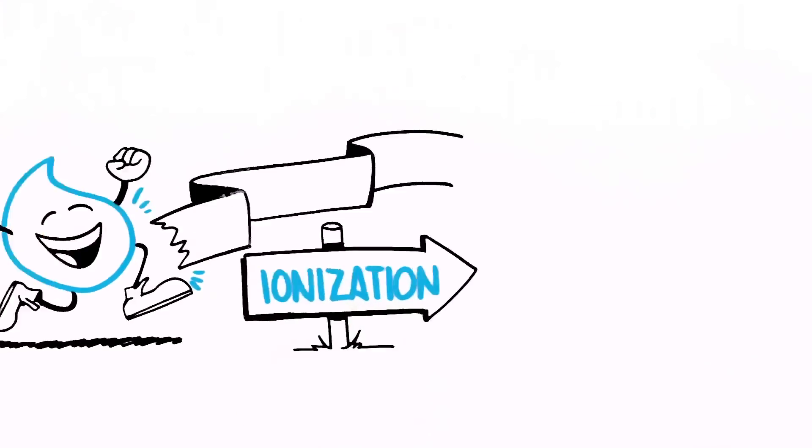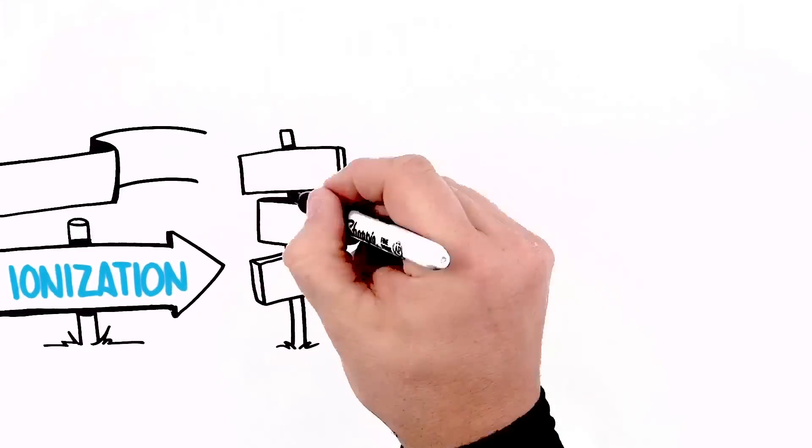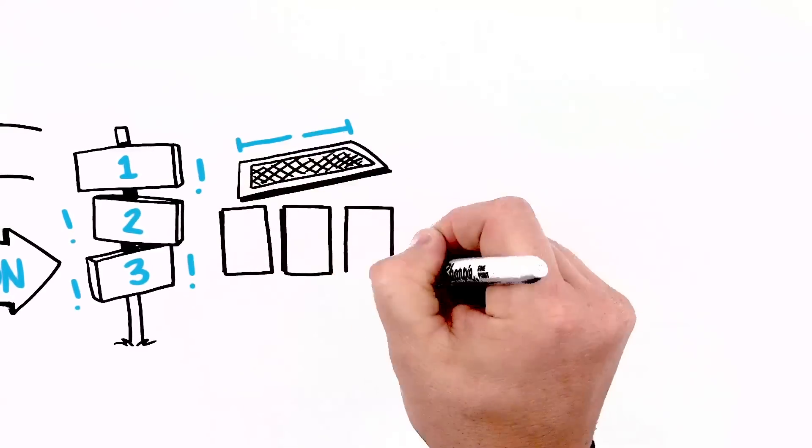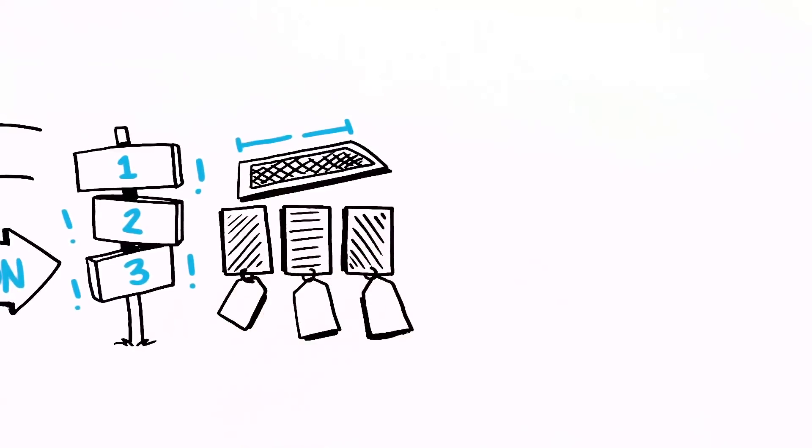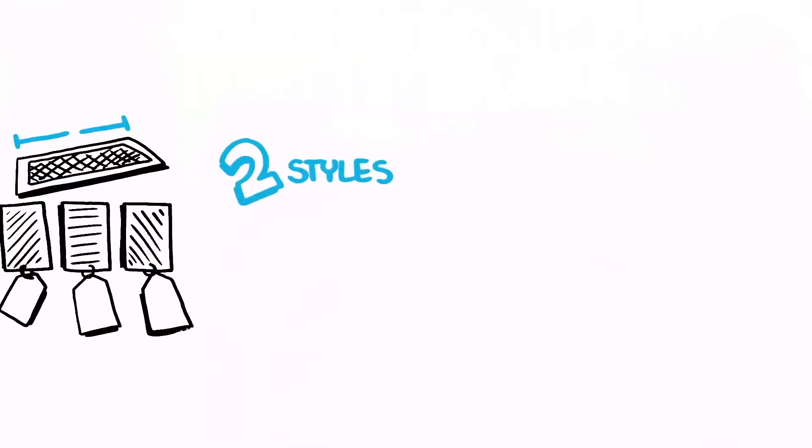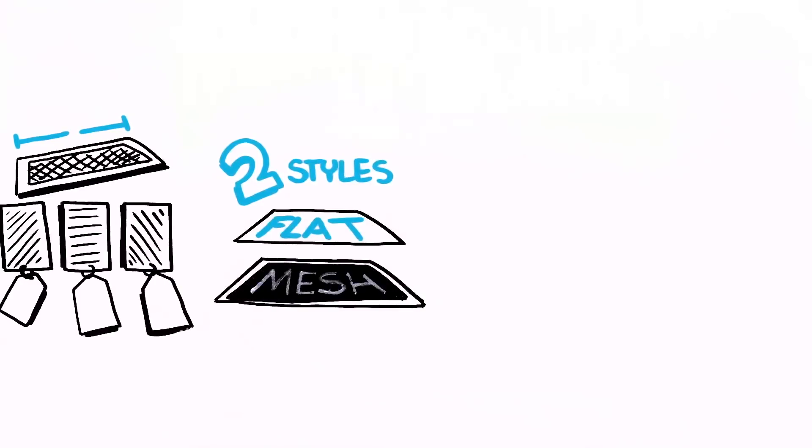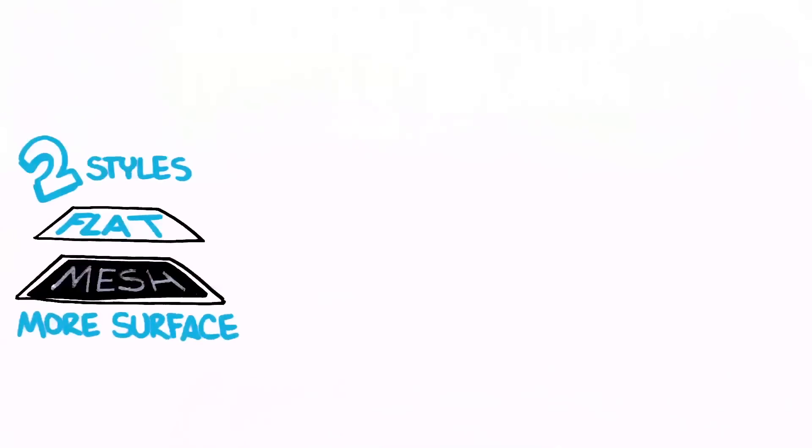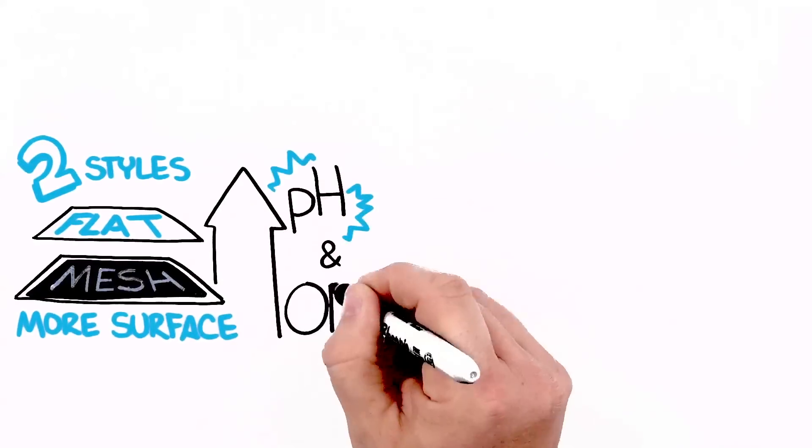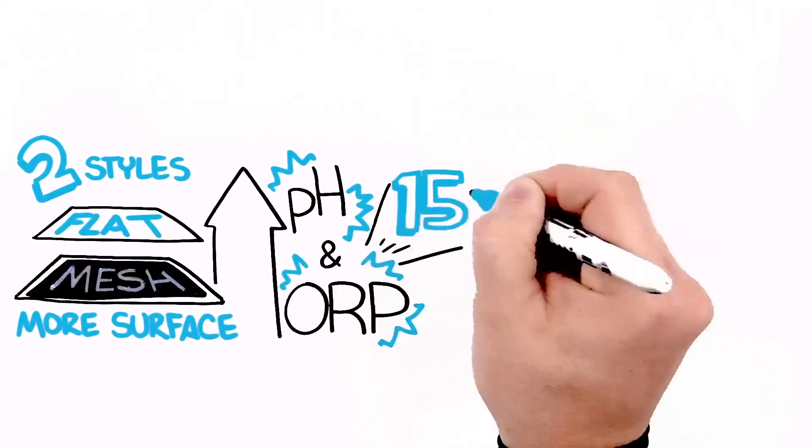Next comes ionization. Watch out for three factors here: plate surface area, the style of the plates, and the power to the plates. Plates come in two main styles, flat and mesh, which creates more linear surface edges, increasing the pH and the ORP levels up to 15%.